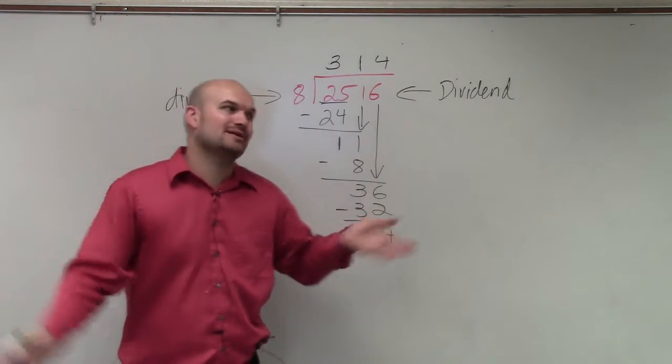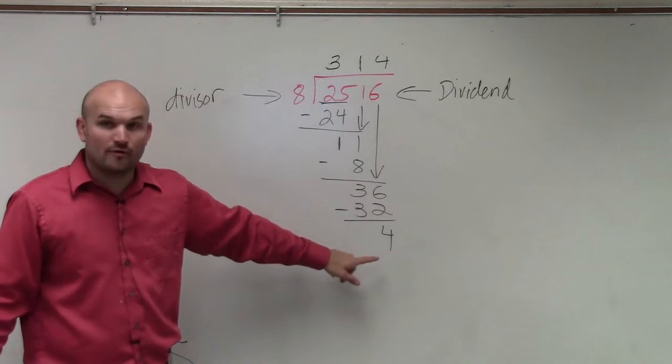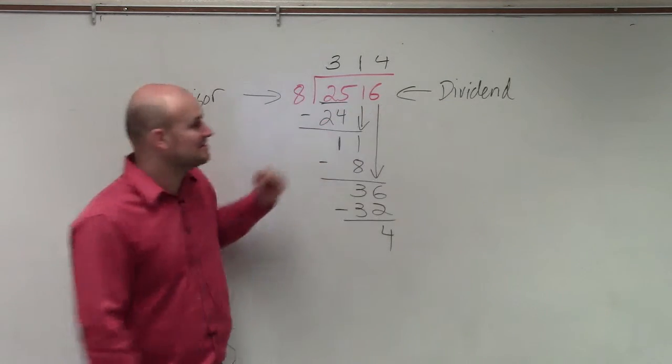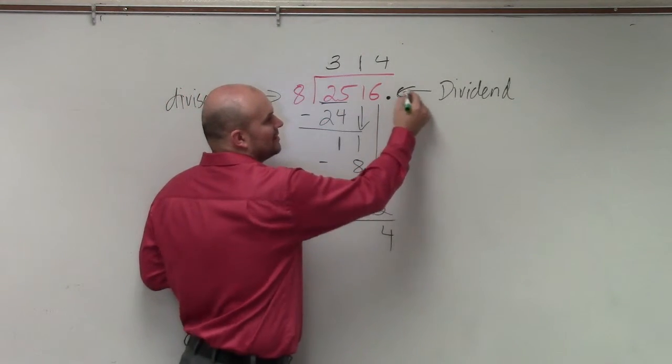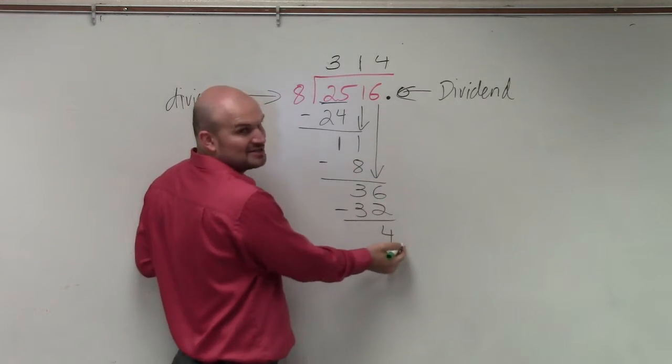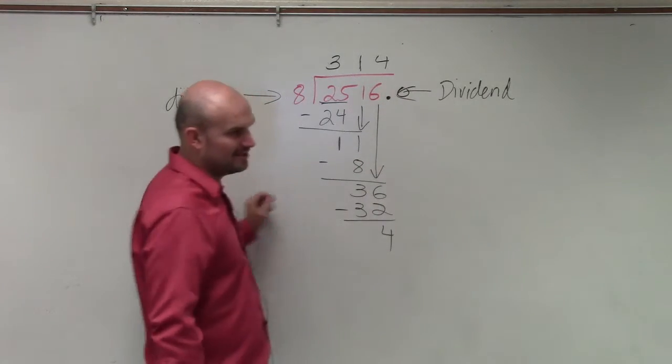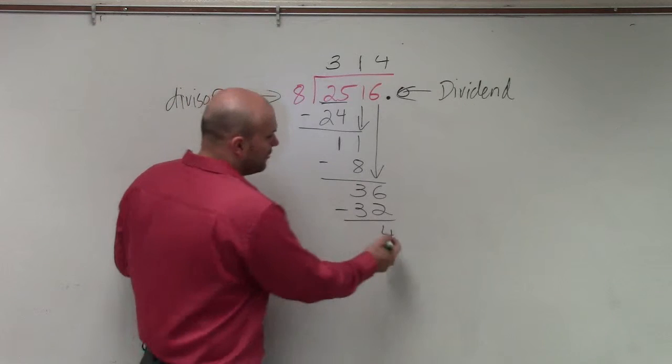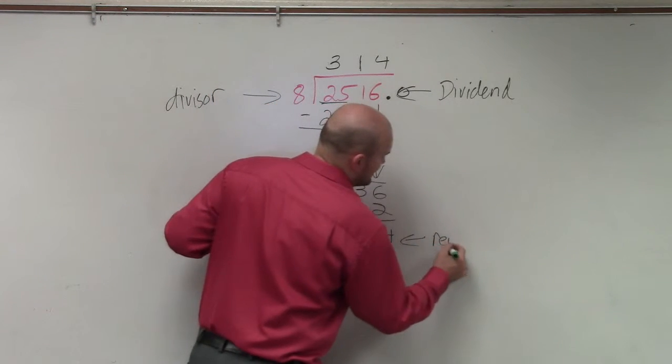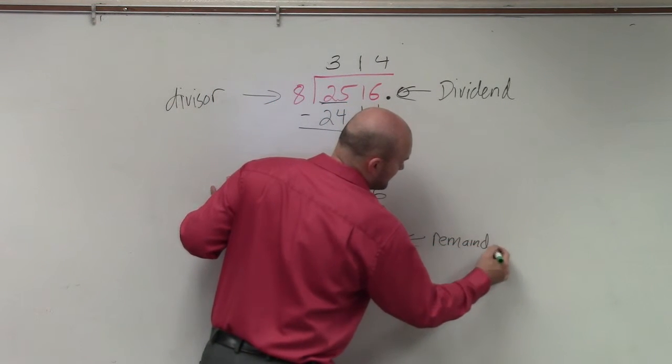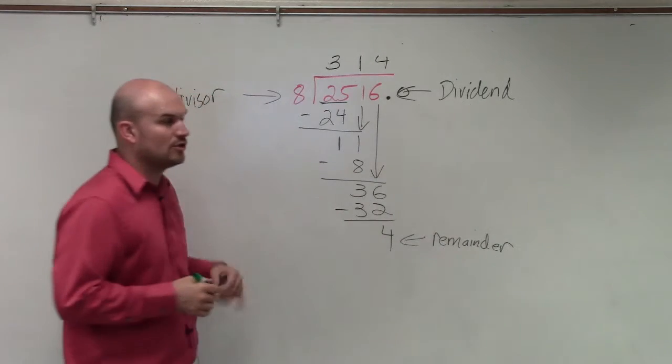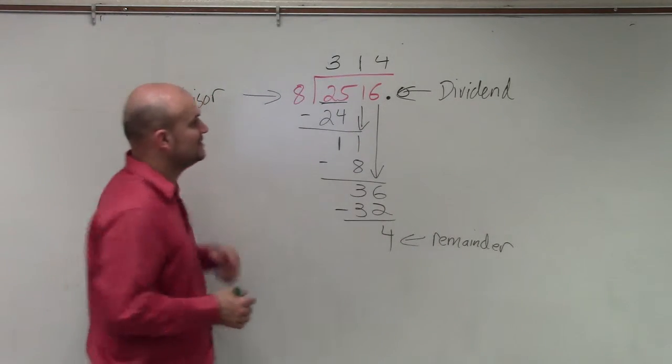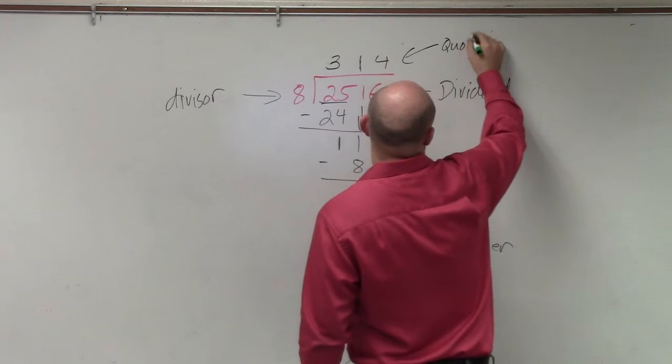Now, technically, if you're in math for college readiness, we would do 8 does not go into 4, right? There's no more numbers. So what you could do is put a decimal point and then do a 0. Then you could bring down a 0. But we're not going to be doing that. We don't really care about that. What I want you guys to understand is this is the remainder. So when you get to a remainder, or 0, that's going to be your remainder, and this is your quotient.